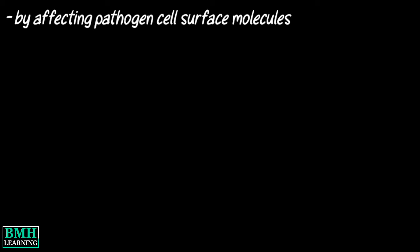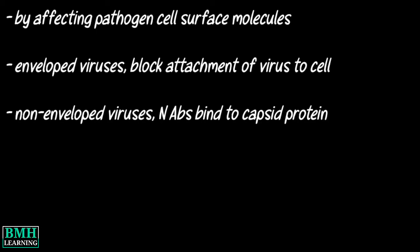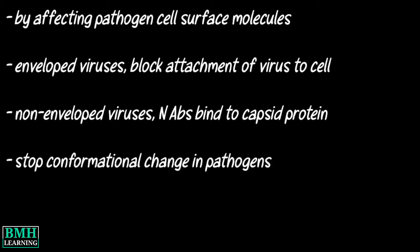Various ways to achieve this: A neutralizing antibody can stop a pathogen by affecting how the molecules on the pathogen's surface can enter cells in the body. In enveloped viruses, neutralizing antibodies block the attachment of a virus to the cell as well as its entry into the cell. In non-enveloped viruses, neutralizing antibodies can bind to the capsid protein. These antibodies can also stop pathogens from changing their structure and shape in order to enter and replicate within a cell.